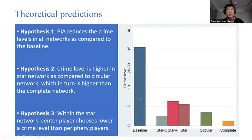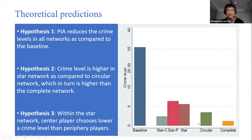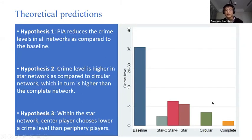Given this intuition, we have the following theoretical predictions. First, comparing the baseline with our PIA treatments across three network structures, our mechanism reduces the crime level in all network structures. Hypothesis two: within the three network treatments, the star should have a higher crime level than circular, which should be higher than complete. Hypothesis three: within the star network, fringe players should commit more crime than the star center. So the crime level depends on both network structure and position within the network.